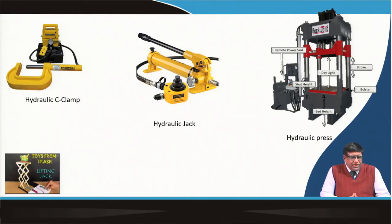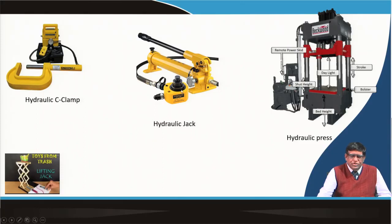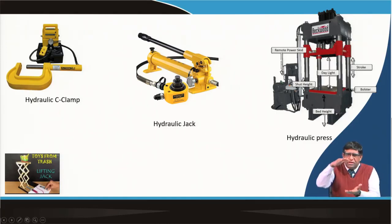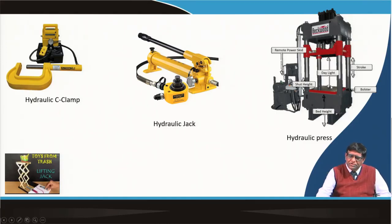Here you can see a hydraulic clamp — if you have to clamp something, you increase the pressure, the fluid comes in, and you hold that thing tightly. A hydraulic jack: you can raise the piston and take the load. A hydraulic press — the lower bolster and ram bolster are shown; in between you can keep a workpiece and apply compressive pressure. There are different uses of these types of machines.